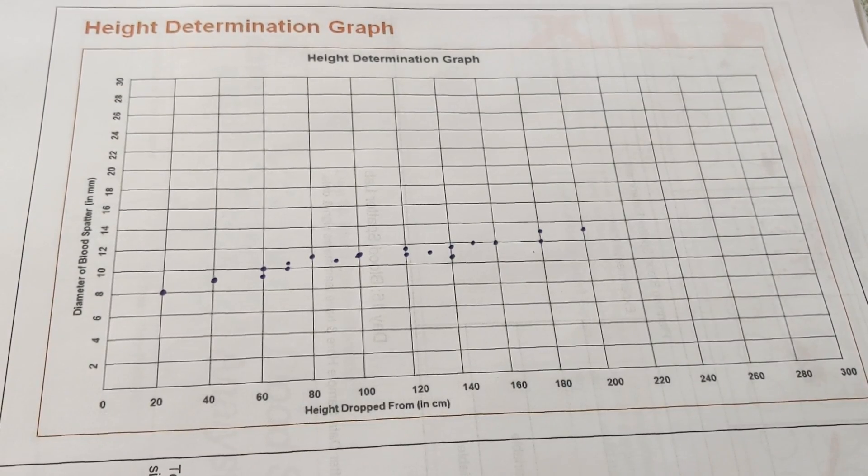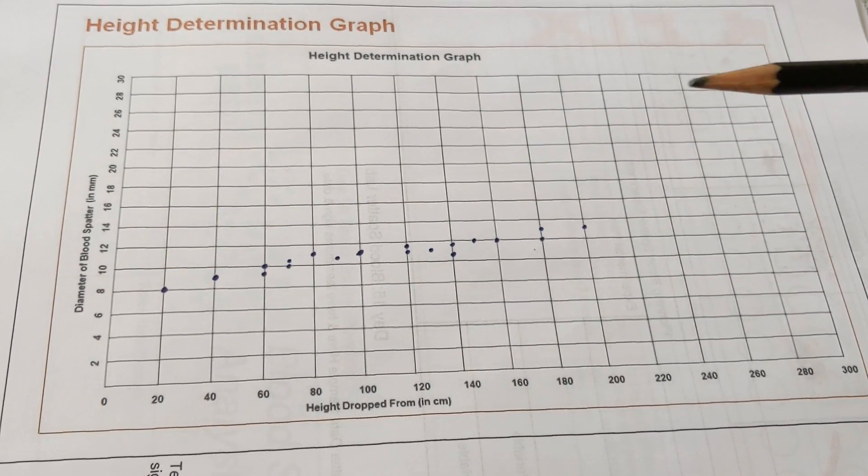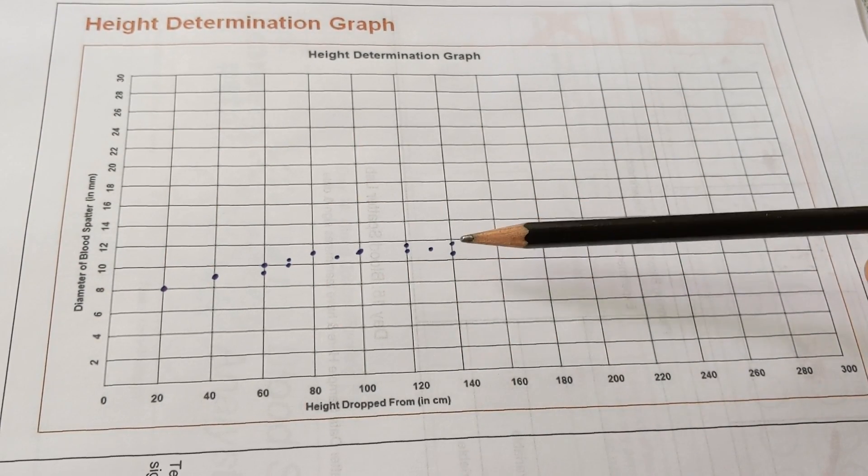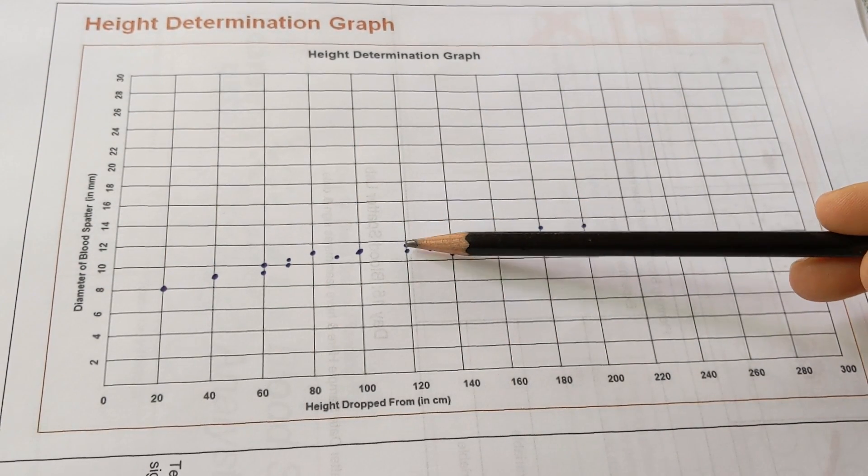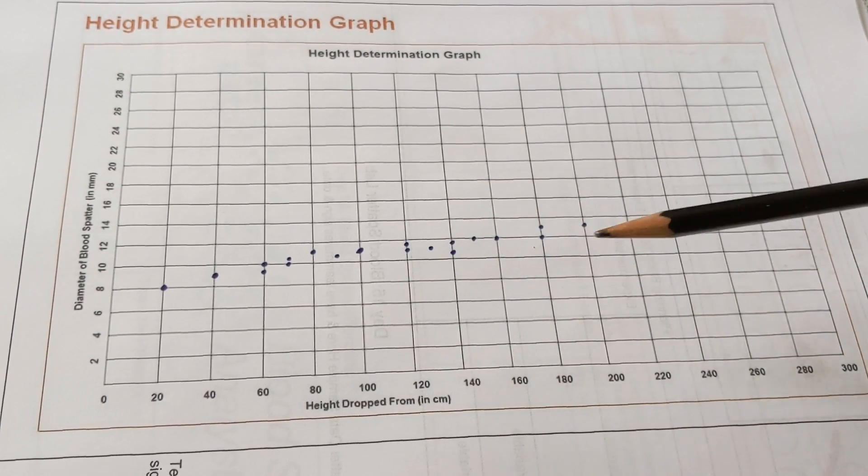You can now see all of my data points that I've plotted on a graph. I had 20 good droplets that I measured, but I have less than 20 dots, and that's because some of them were in the same place, so they overlapped, and I only drew the dot one time.